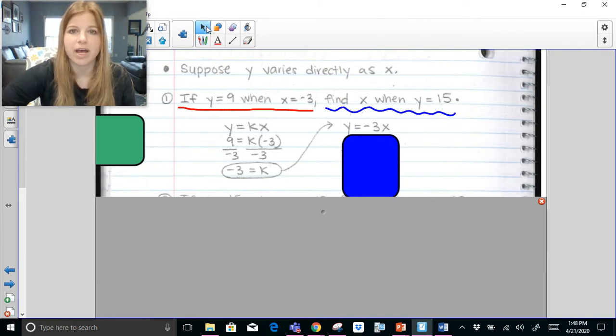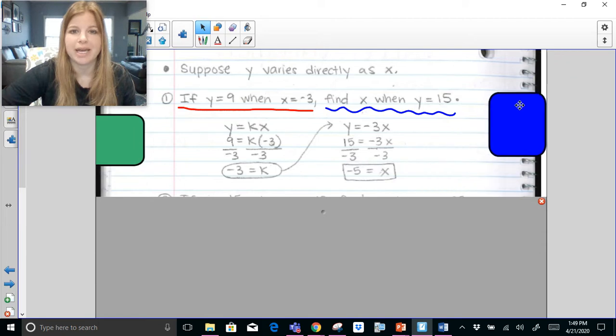Once I find the value of k from my first part of my equation, I can then do the second part. The second part says find x when y equals 15. So that's exactly what I'm going to do. I'm going to figure out what the x value is when 15 goes in for y. Divide both sides by negative 3 and we end up getting x equals negative 5. That's it. That's how easy it is to solve a direct variation equation.